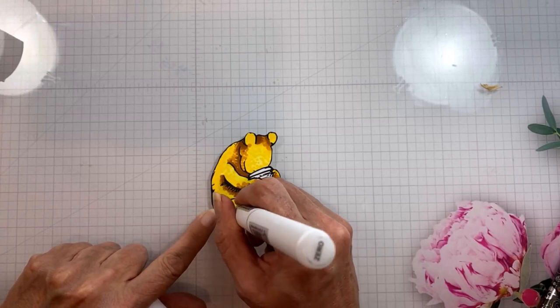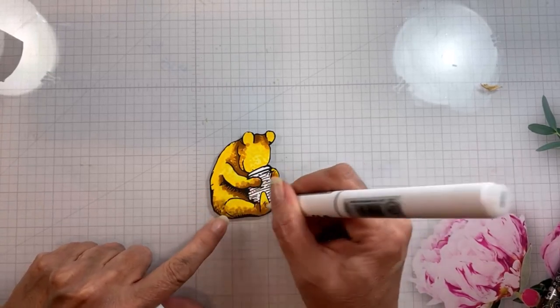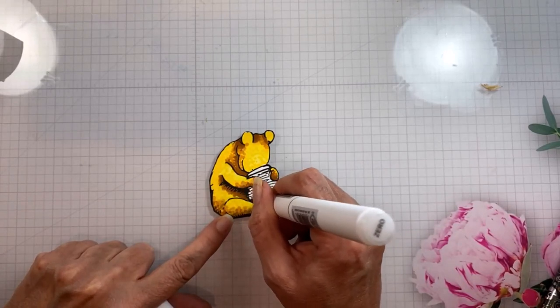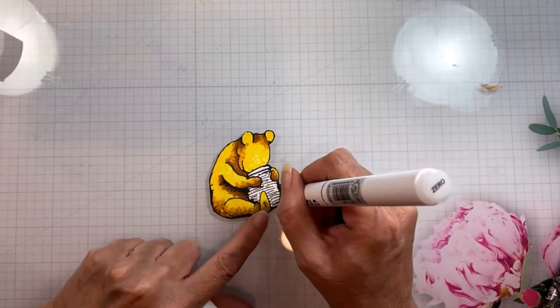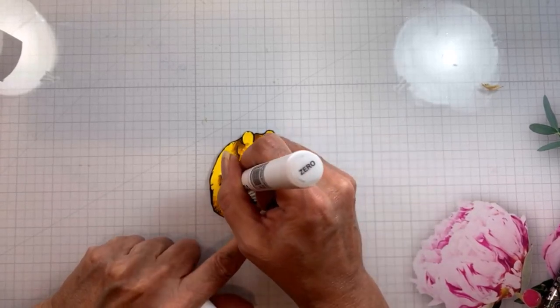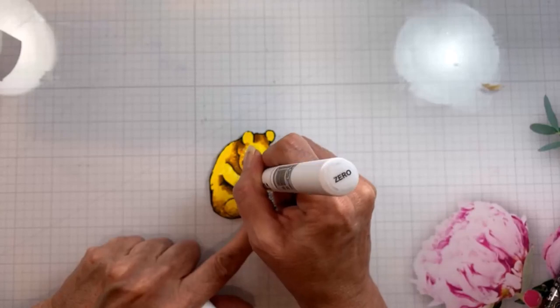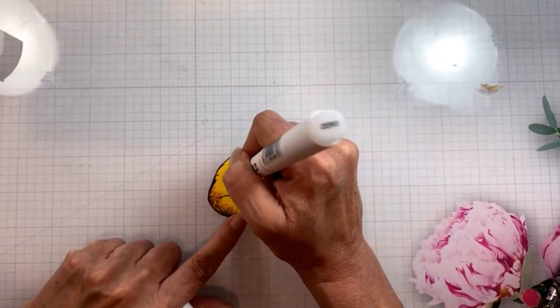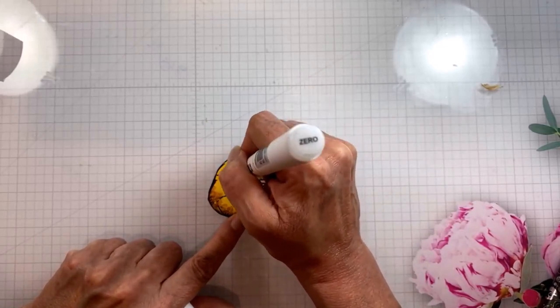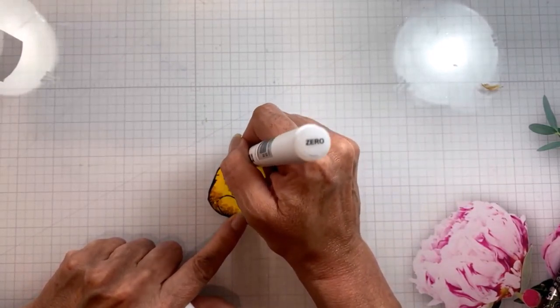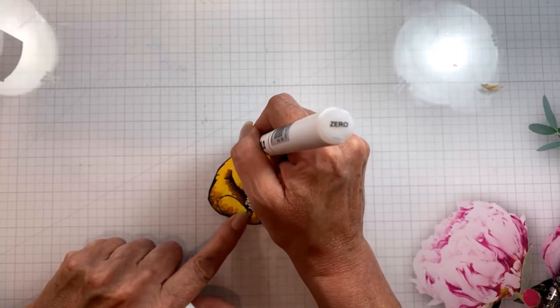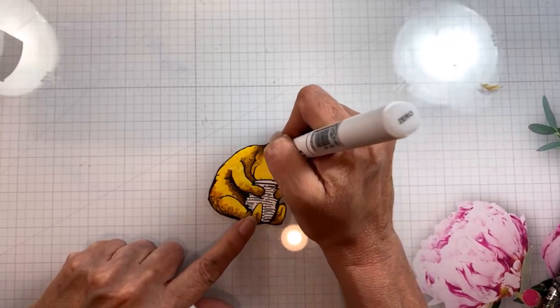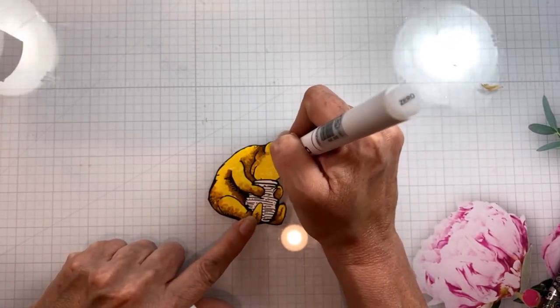Now I'm also using the zero marker to add texture, so you can go back and forth between the zero marker and different colors of marker to add texture and lift out some of the darker areas, but all with that same shape of the dot that gives you the fur detail. I tend to go back and forth between the colors and the zero until I've added enough layers of texture that it really looks like a little teddy bear.